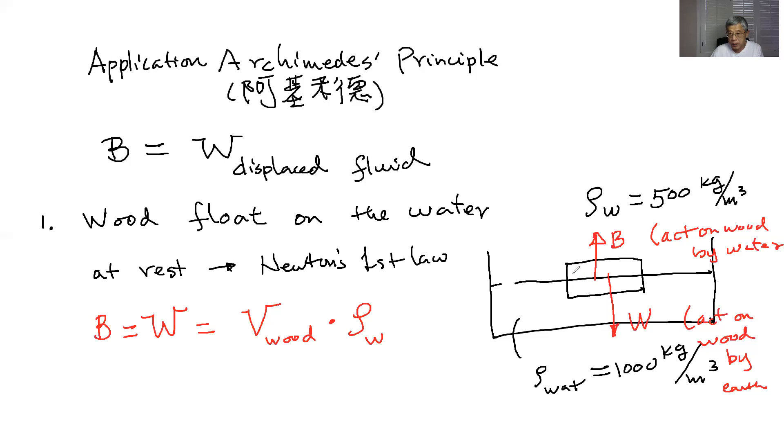So in this case, let's say the volume is equal to 0.1 meter cubed. So that's equal to 0.1, and then times the wood density, which is 500. So then you have 50.